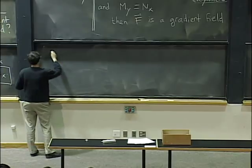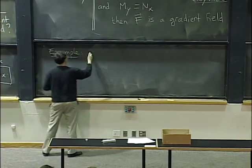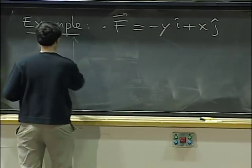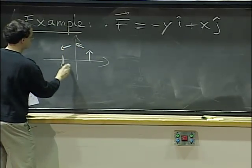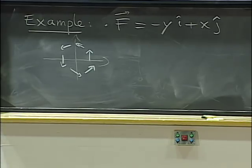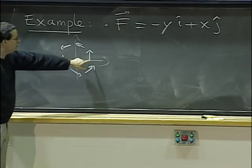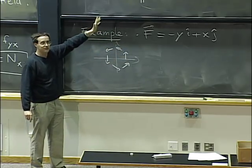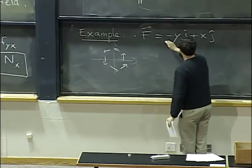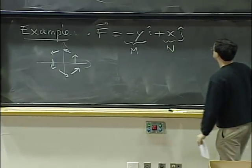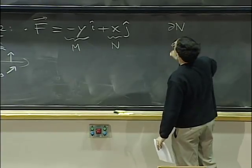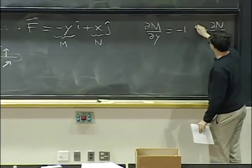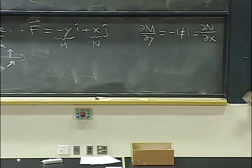Let's look at an example. One vector field we've been looking at a lot is negative y i plus x j — the vector field that looks like rotation at unit speed. Last time we decided this should not be a gradient field and should not be conservative, because if we integrate on the unit circle we get a positive answer. Let's check it fails our test. Calling M = -y and N = x, partial M partial y is negative one, and partial N partial x is one. These are not the same, so indeed this is not a gradient field.